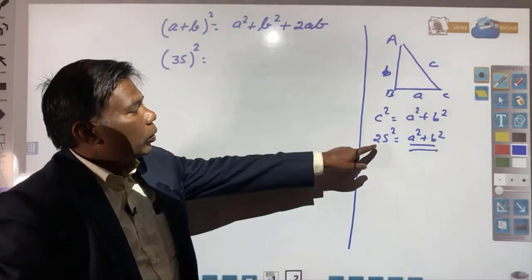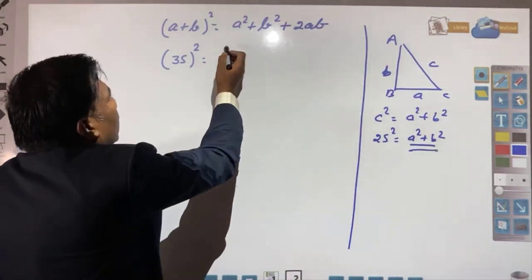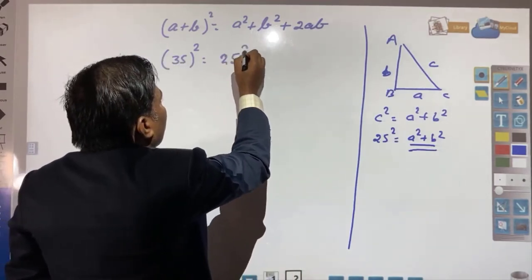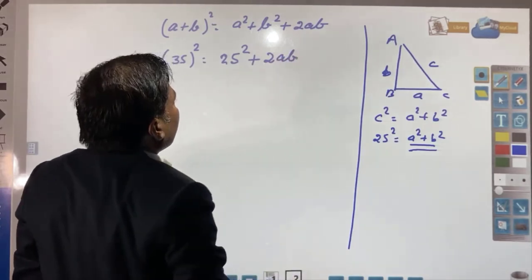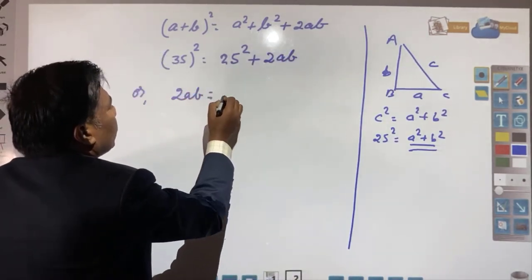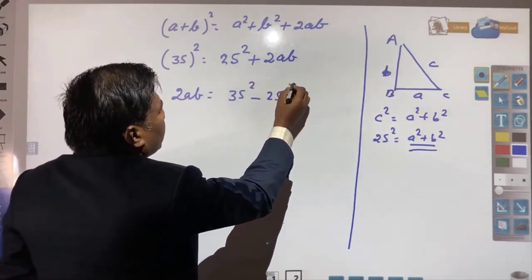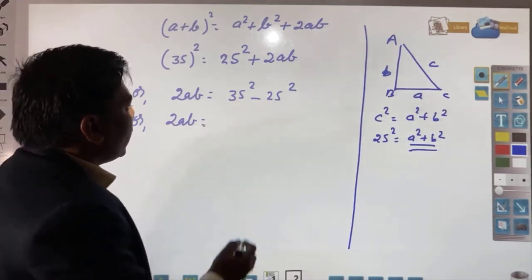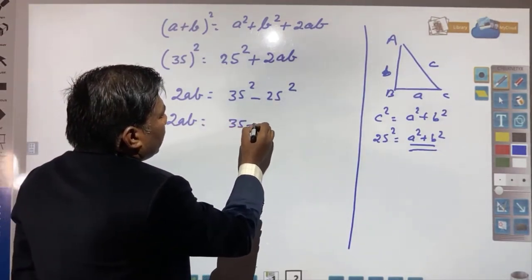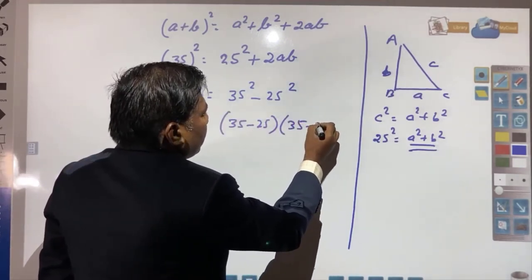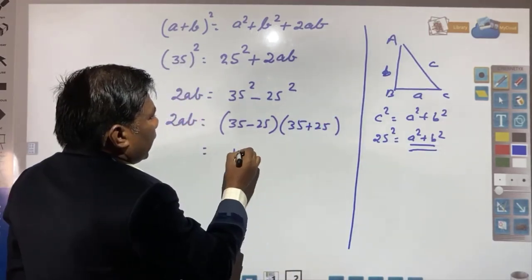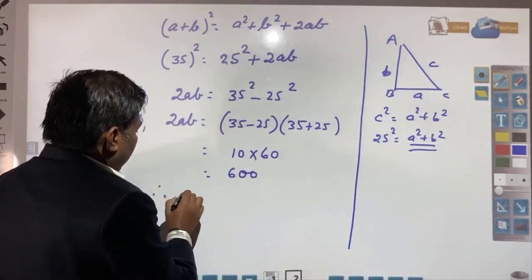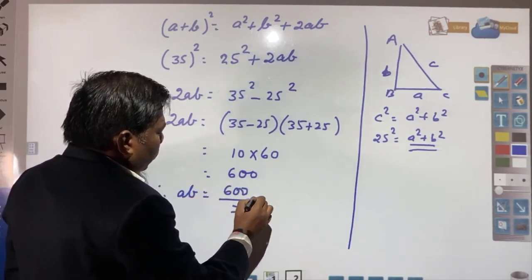So a² + b² = 25². We can substitute this into our identity: 35² = 25² + 2ab. Therefore 2ab = 35² − 25² = (35 − 25)(35 + 25) = 10 × 60 = 600. And therefore ab = 600 divided by 2, which gives ab = 300.